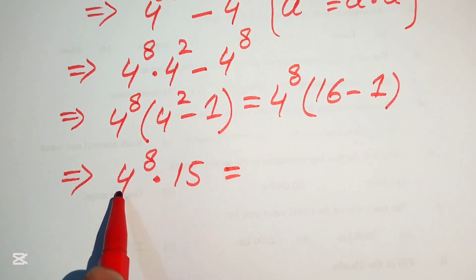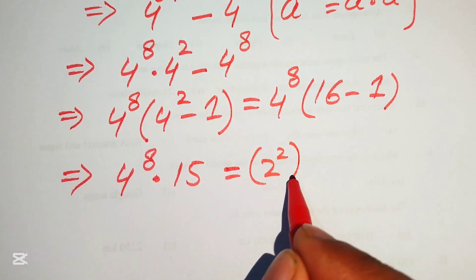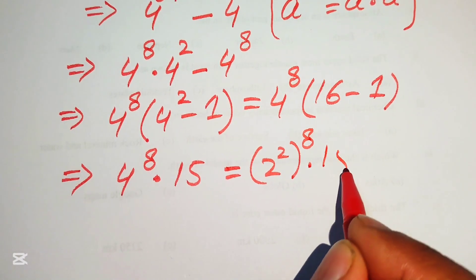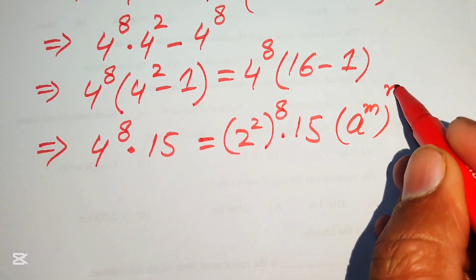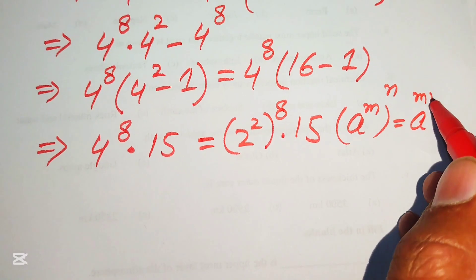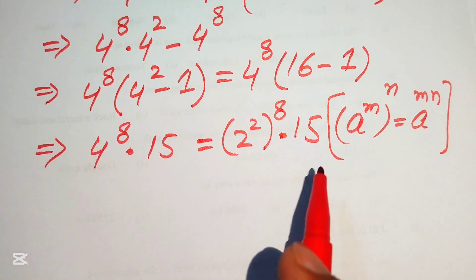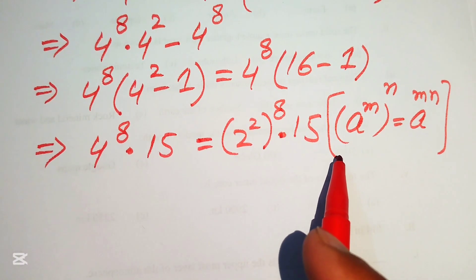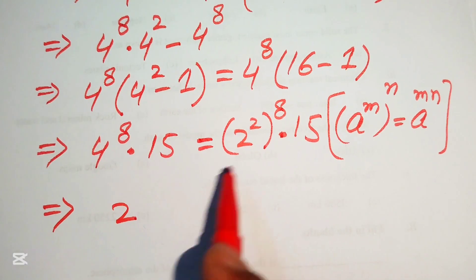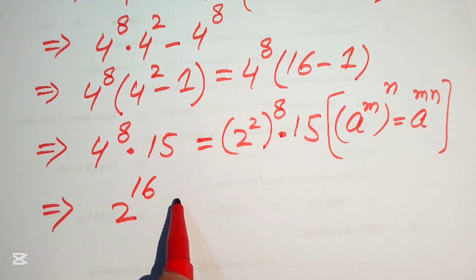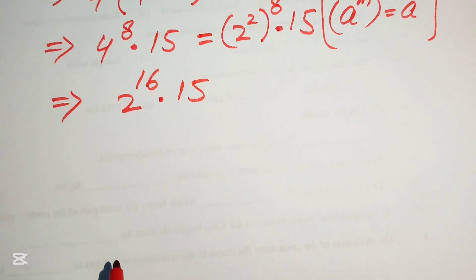So we have 4 to the power of 8 multiplied by 15. Next, we focus on the base of this term: the base is 4, which we write as 2 squared, with exponent 8, multiplied by 15. We use another exponent law: a to the power of m to the power of n equals a to the power of m times n. So we multiply the exponents: 2 to the power of 2 times 8 equals 2 to the power of 16, multiplied by 15.